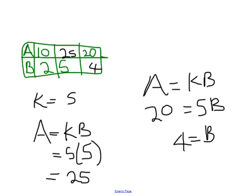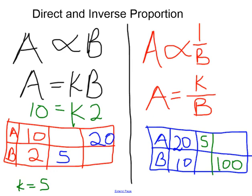The second one we'll look at is inverse proportion. If a is inversely proportional to b, because it's inversely proportional, you have 1 over b with your proportionality sign. To write it as an equation, the 1 becomes a k, which is the constant of proportionality.